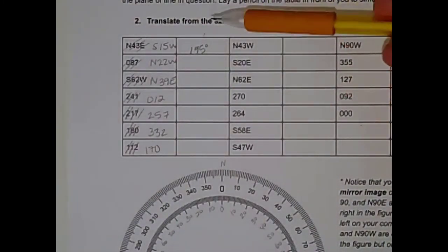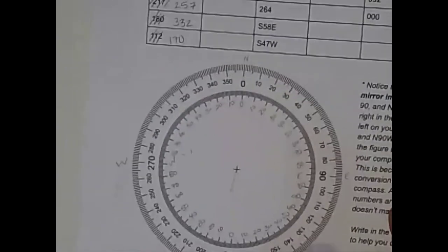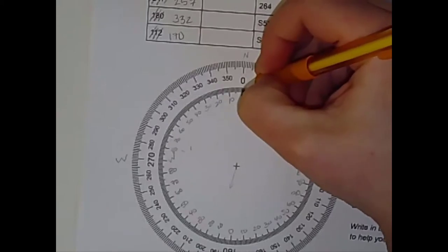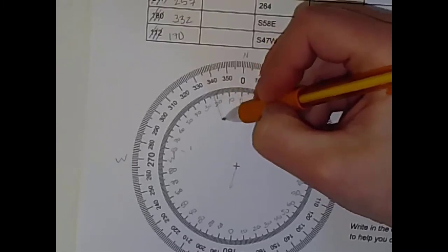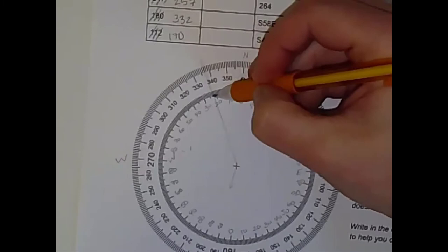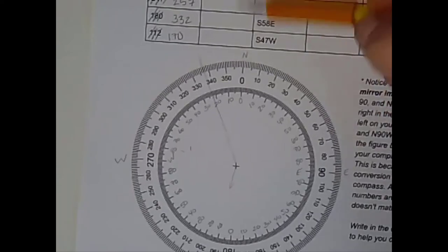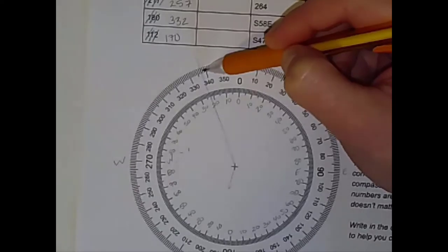Okay. The next example is north 22 west. So north, we're moving over 22 to the west. So my orientation is something like that. So I'm going to expect an answer in the high 330s. I'm counting 22 degrees over from north. So this is 10, 20, 22 is 338.